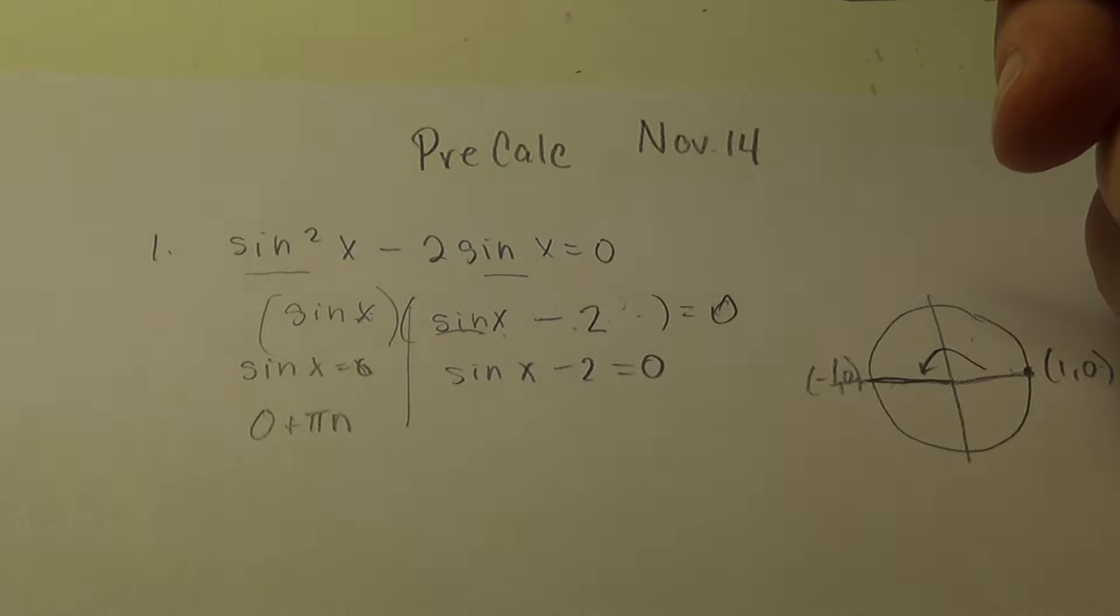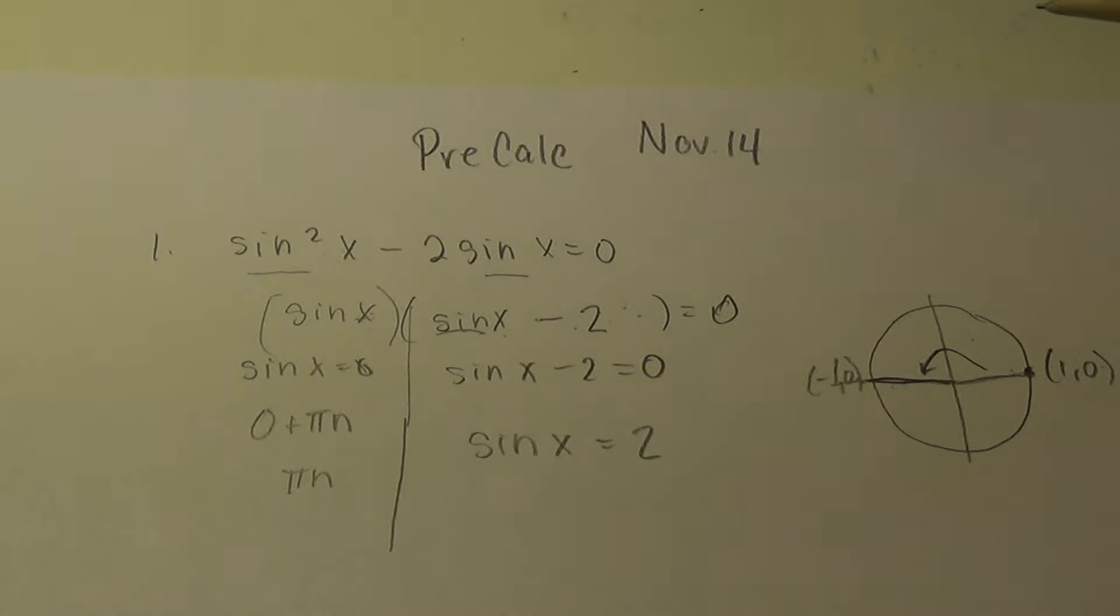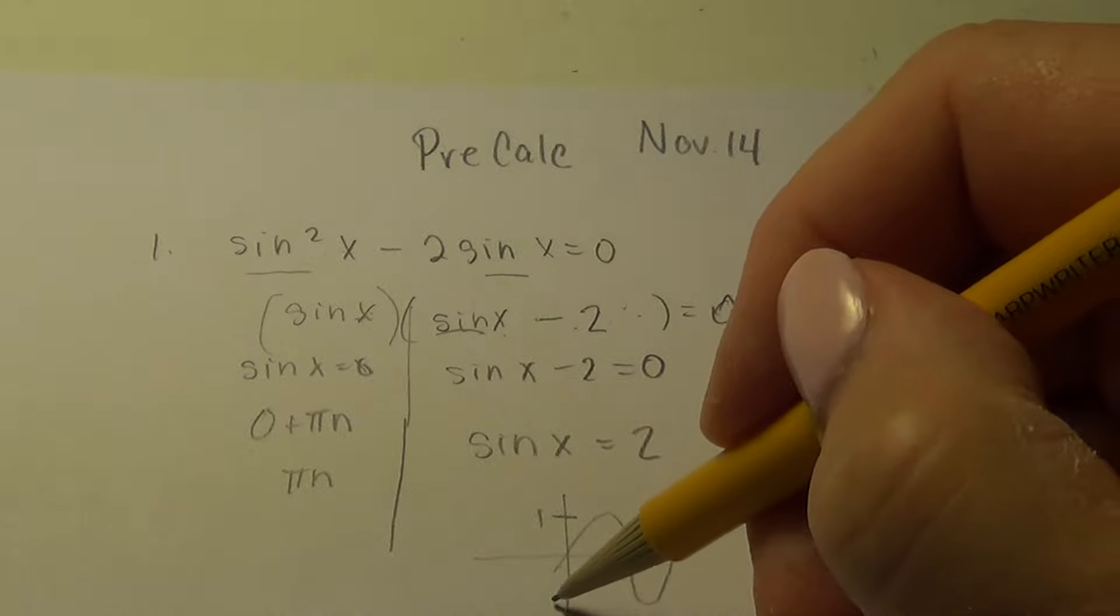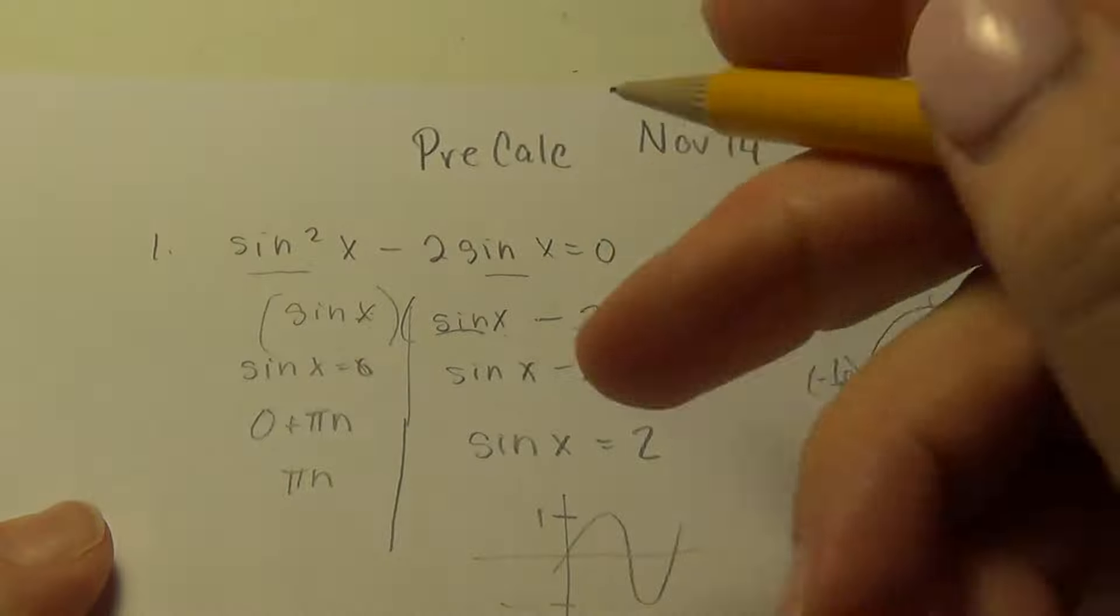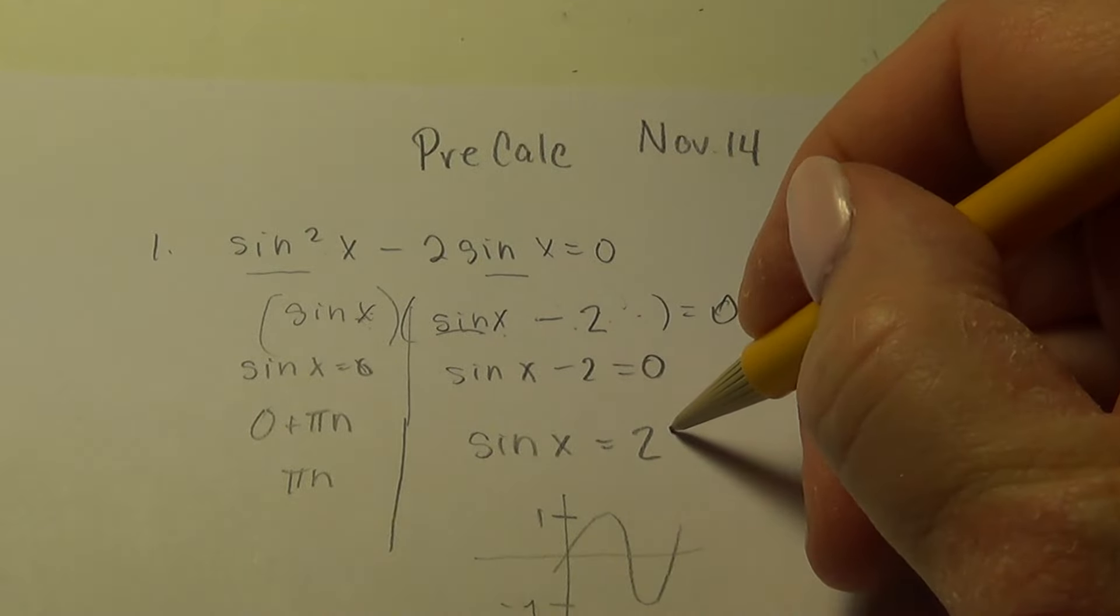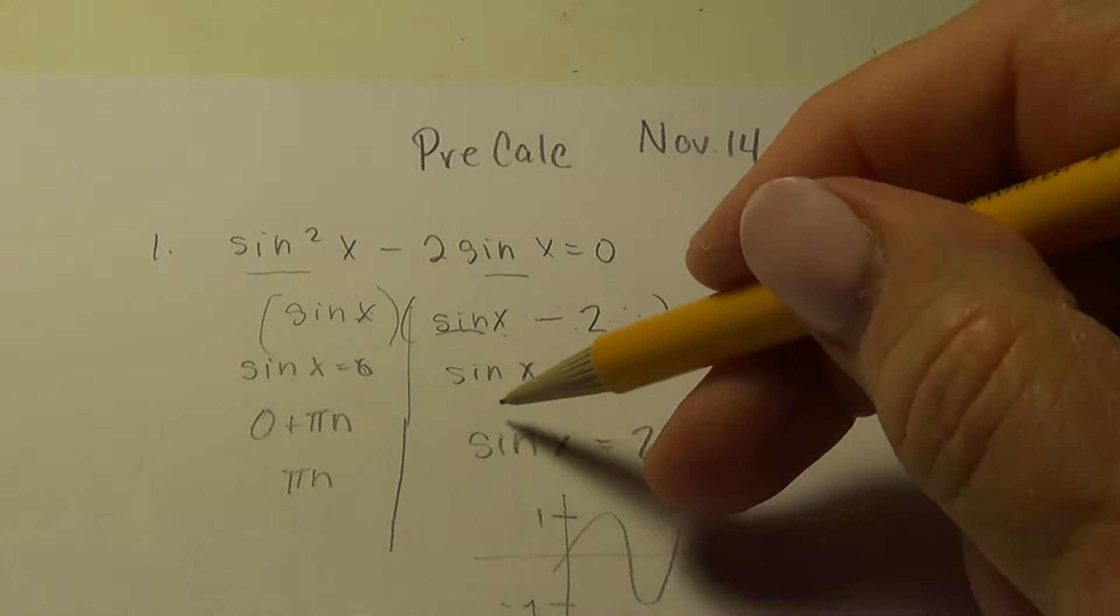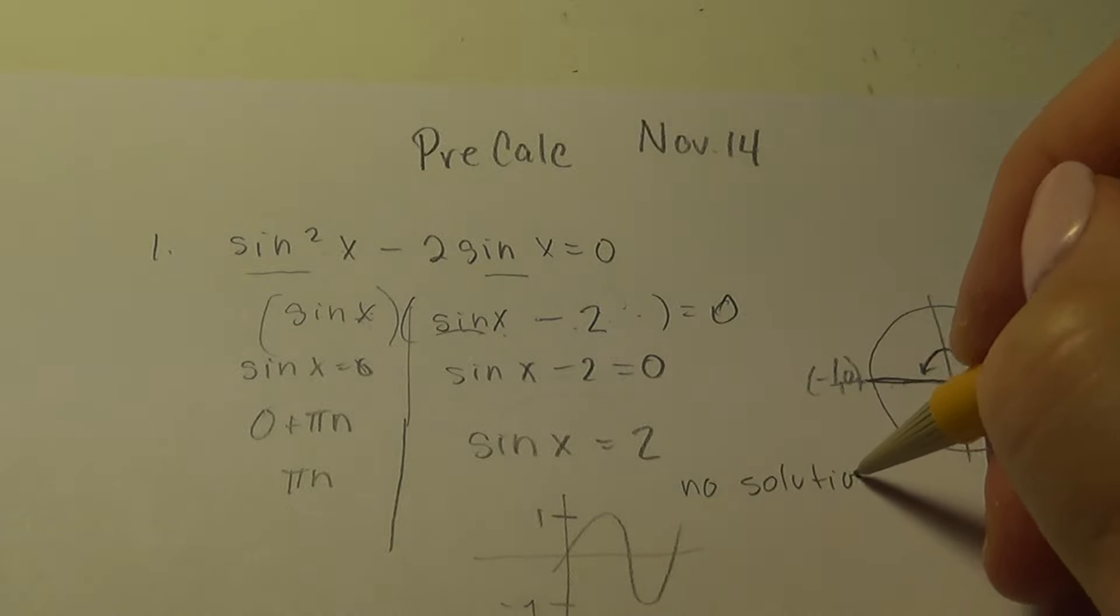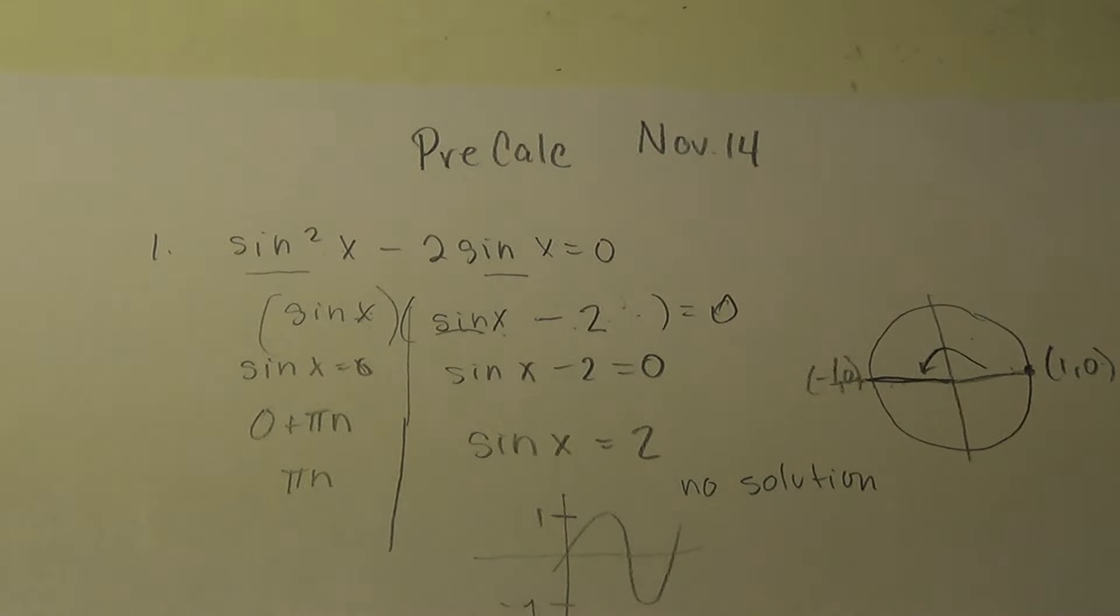The other branch isn't as fortunate because it becomes sin x = 2. And we know we've graphed the sine function probably a hundred times, and we know that it only goes up to 1 and down to -1. It never reaches 2, so therefore there's no such answer to this equation. So we say no solution from this branch. We've got one solution there, πn.